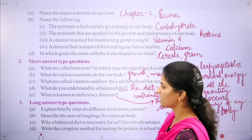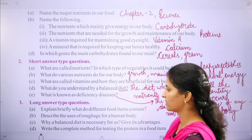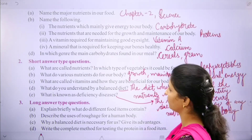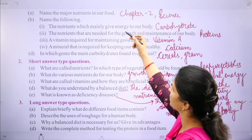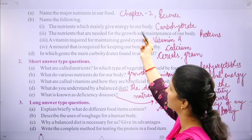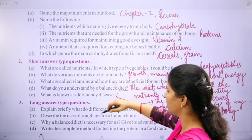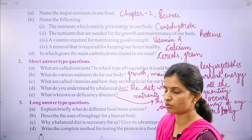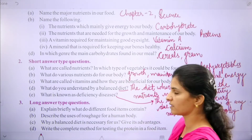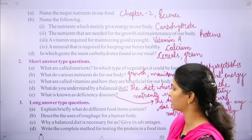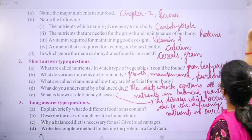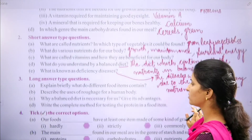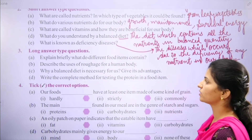Next are long answer type questions. First question: explain briefly what different food items contain, and what are the major nutrients in our body — you have to explain carbohydrates and proteins. Next question: describe the uses of roughage for a human body. Roughage is also necessary.